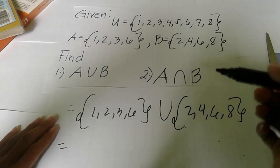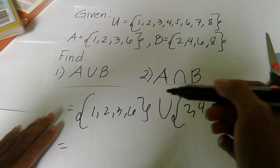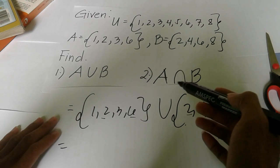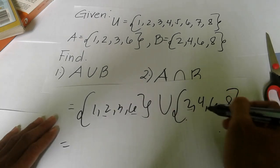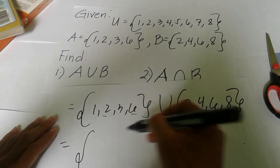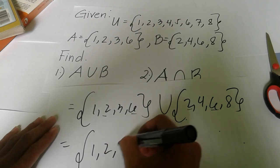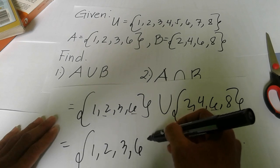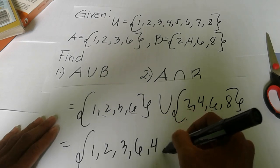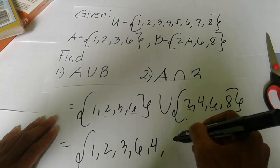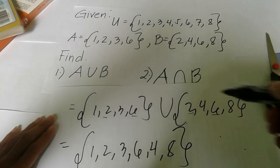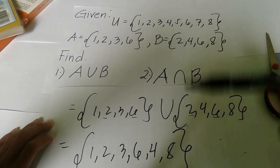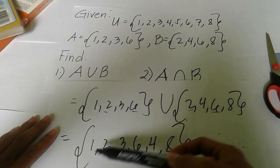If there are repeated elements, we only write them once. For instance, we have 2 in both sets, and 6 in both sets — we only write each once. So A union B has elements 1, 2, 3, 6, 4, and 8. The cardinality is 6.